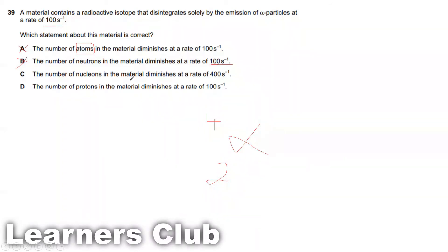The number of nucleons in the material diminishes at a rate of 400 per second. Yes, because 1 alpha contains 4 nucleons. So 100 per second disintegration of alpha particle will disintegrate 400 per second. Then here they have told the protons in the material diminishes at 100 per second. There are 2 protons, so it should be 200 per second. So that means option D is wrong. Therefore the only correct answer is option C.